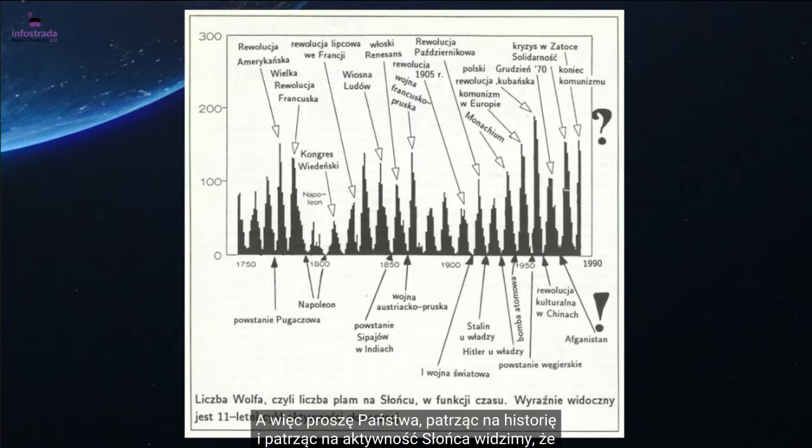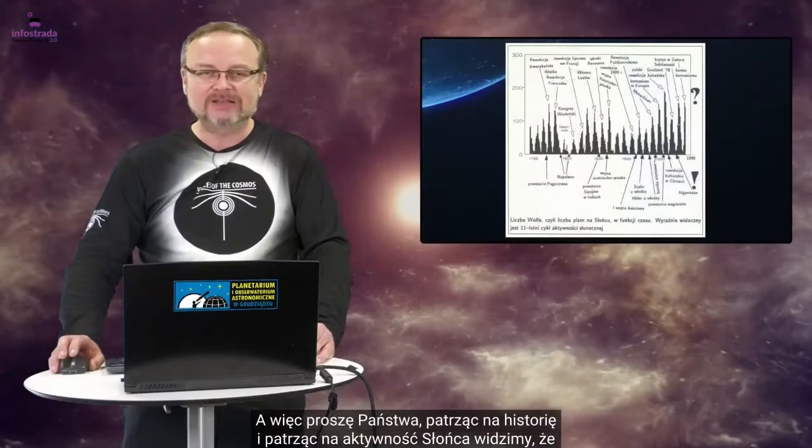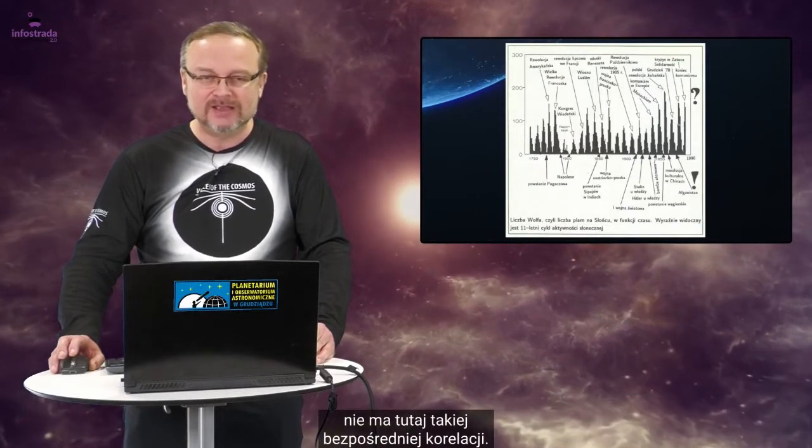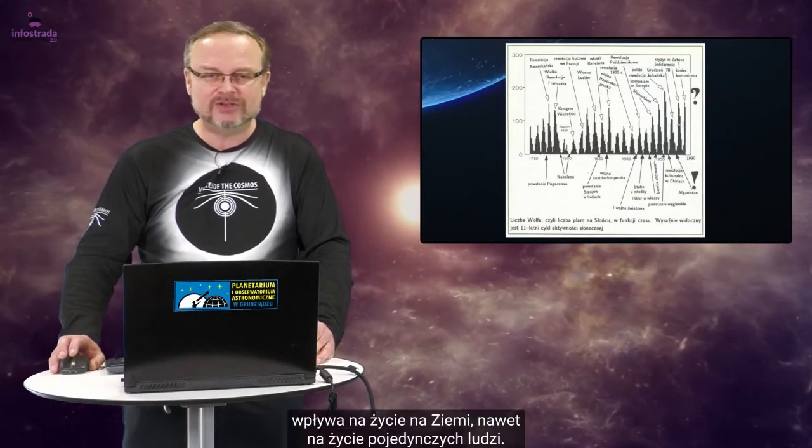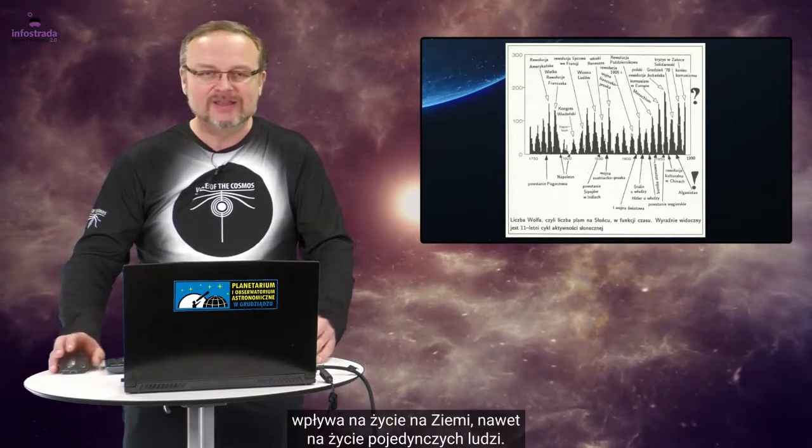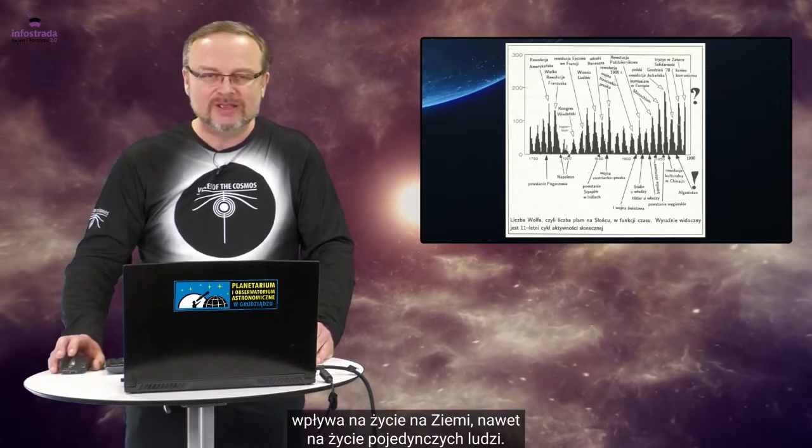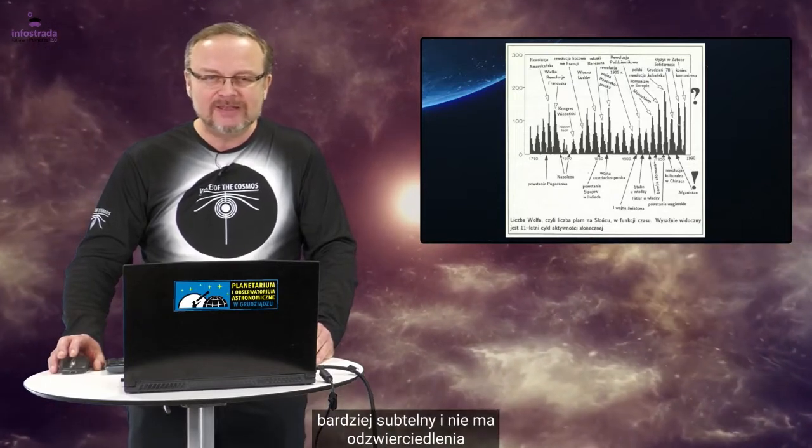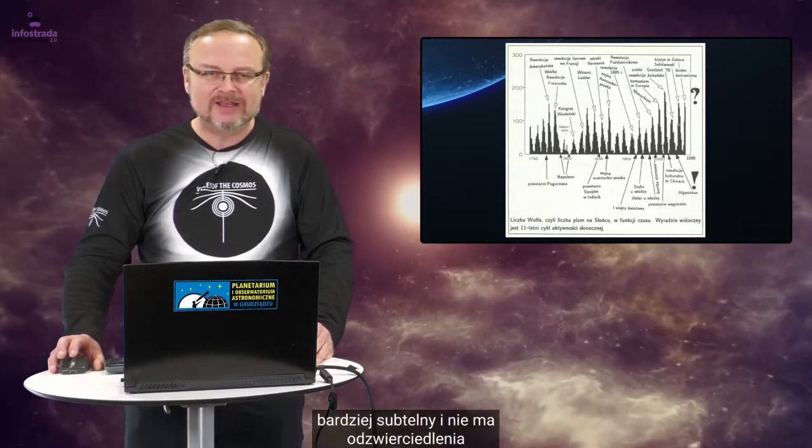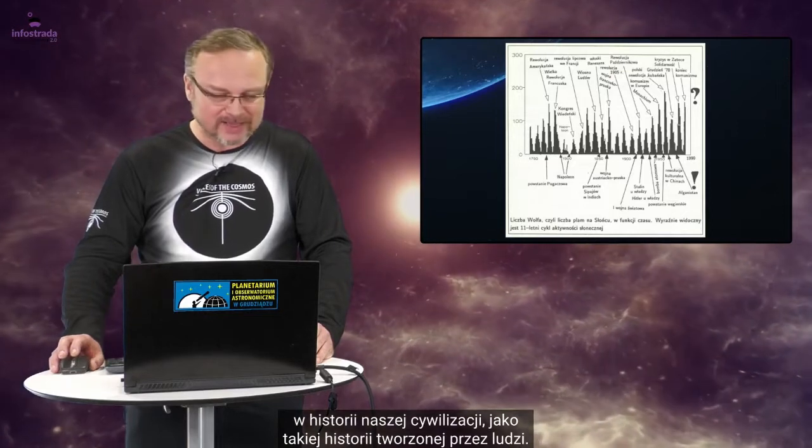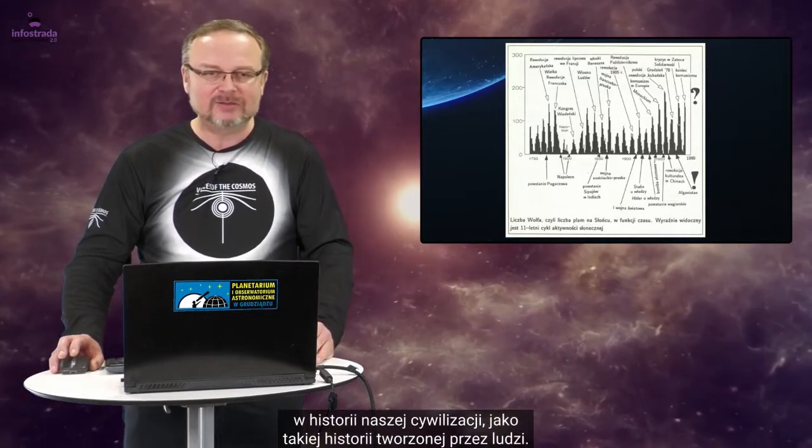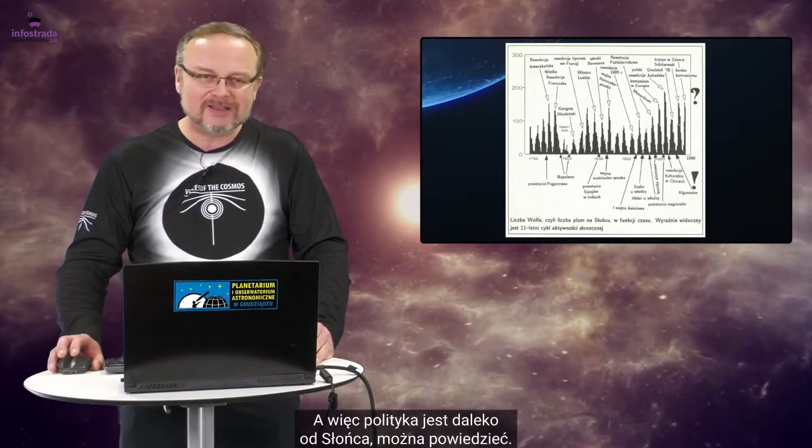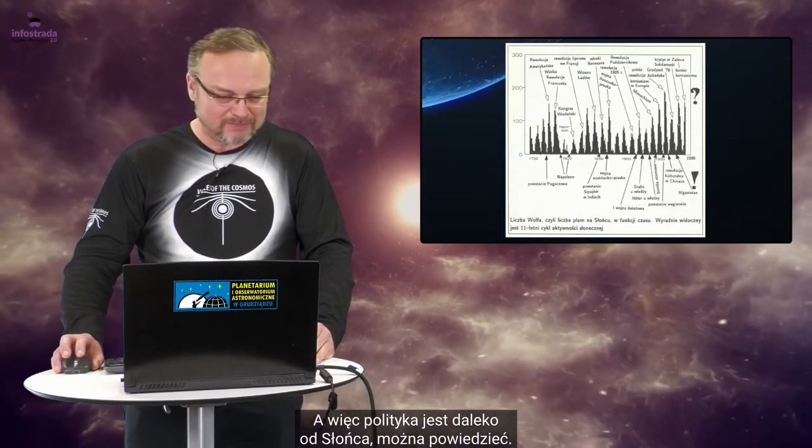A więc, proszę Państwa, patrząc na historię i patrząc na aktywność Słońca, widzimy, że nie ma tutaj takiej bezpośredniej korelacji. Nie znaczy to oczywiście, że Słońce nie wpływa na życie na Ziemi, nawet na życie pojedynczych ludzi, tylko że po prostu ten wpływ jest trochę bardziej subtelny i nie ma odzwierciedlenia w historii naszej cywilizacji, jako takiej historii, powiedzmy, tworzonej przez ludzi. A więc polityka jest daleko od Słońca, można powiedzieć.